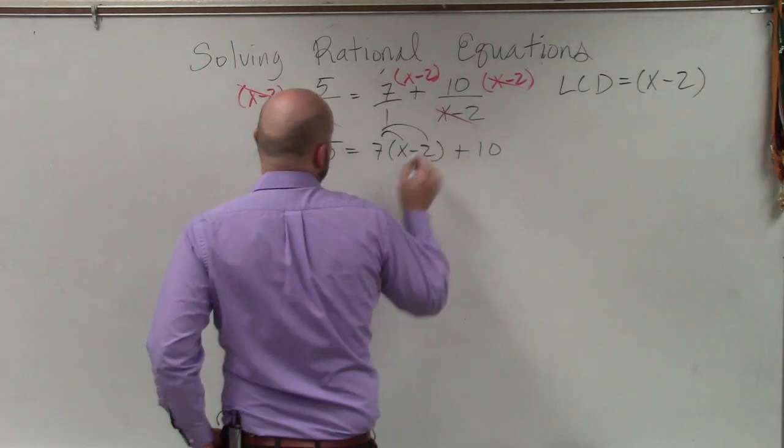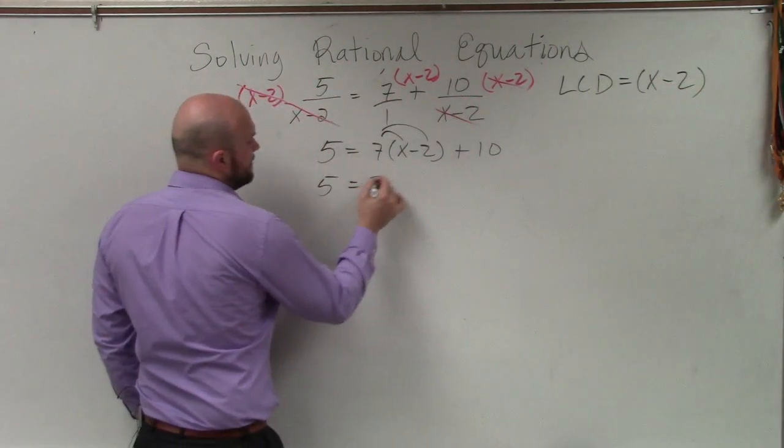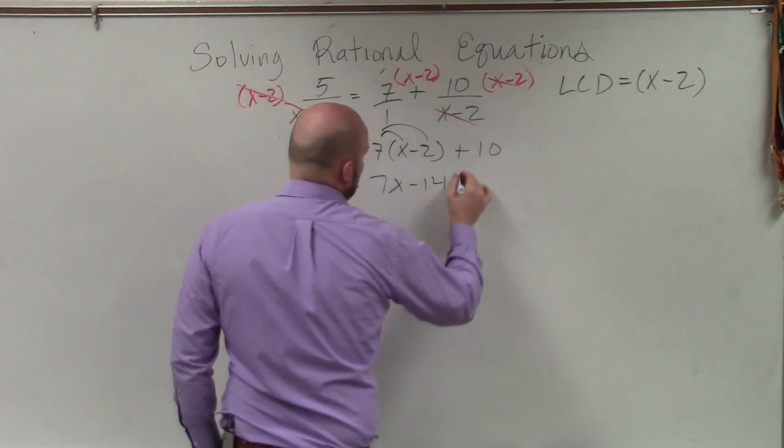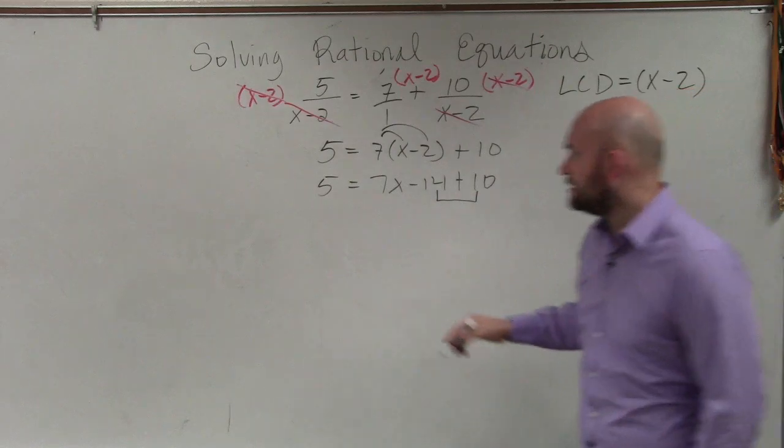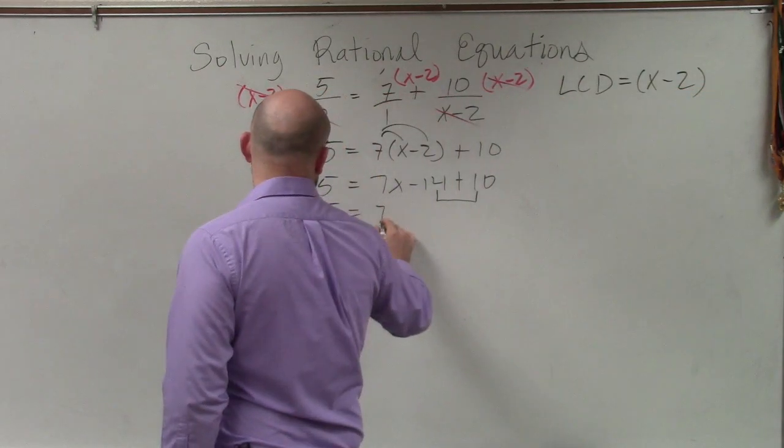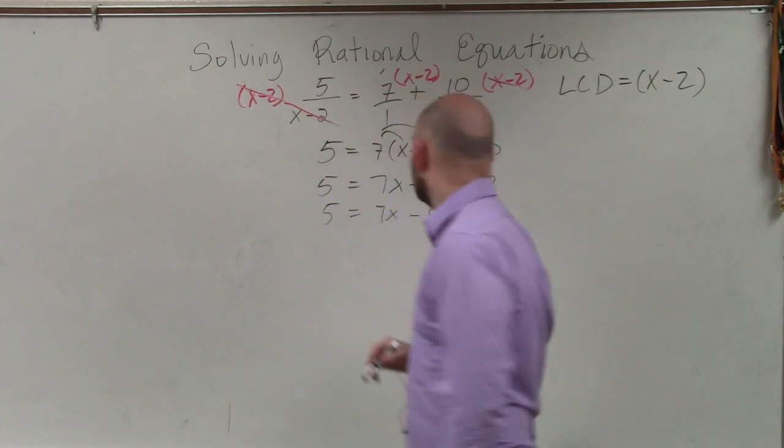OK. So now I apply distributive property. 5 equals 7x minus 14 plus 10. Combine my like terms. 5 equals 7x minus 4.